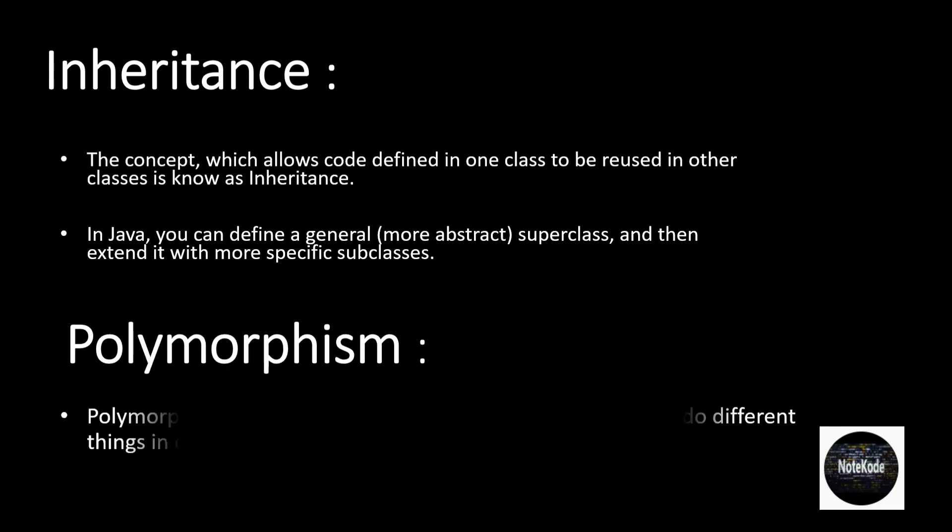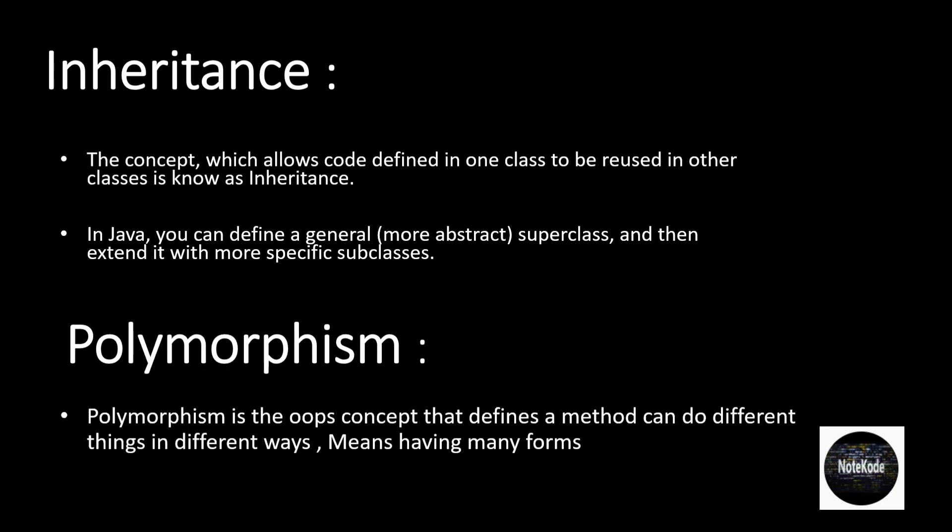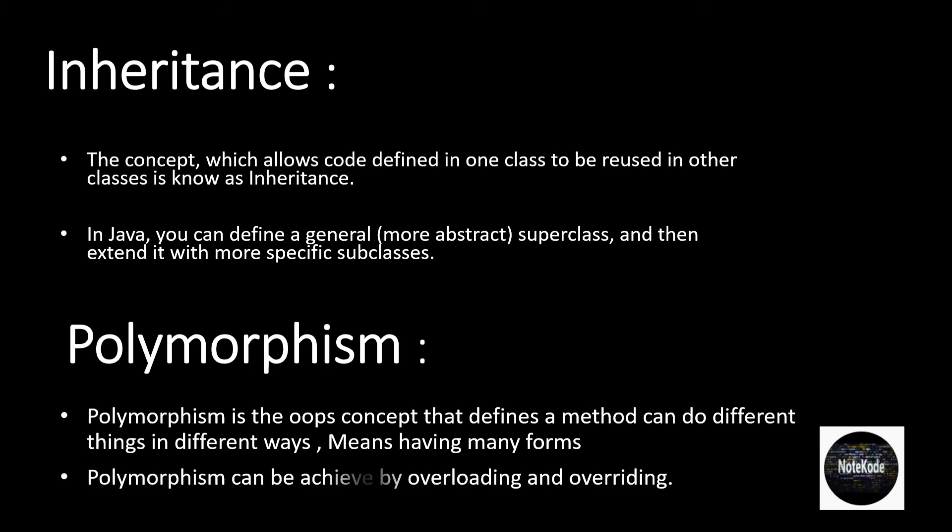Polymorphism. Polymorphism is the OOP concept that defines that a method can do different things in different ways, meaning having many forms. Polymorphism can be achieved by overloading and overriding.